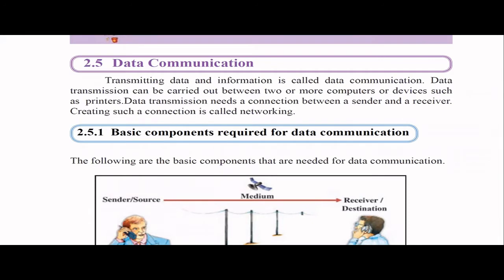In this video we are going to talk about networking and data communication. Data communication means we need to transmit data and information from one place to another — from one computer to another, or to other devices like printers. In this data transmission, we need a connection between two parties: a sender and a receiver, with a medium to carry the message. Creating such a connection is what we call networking.